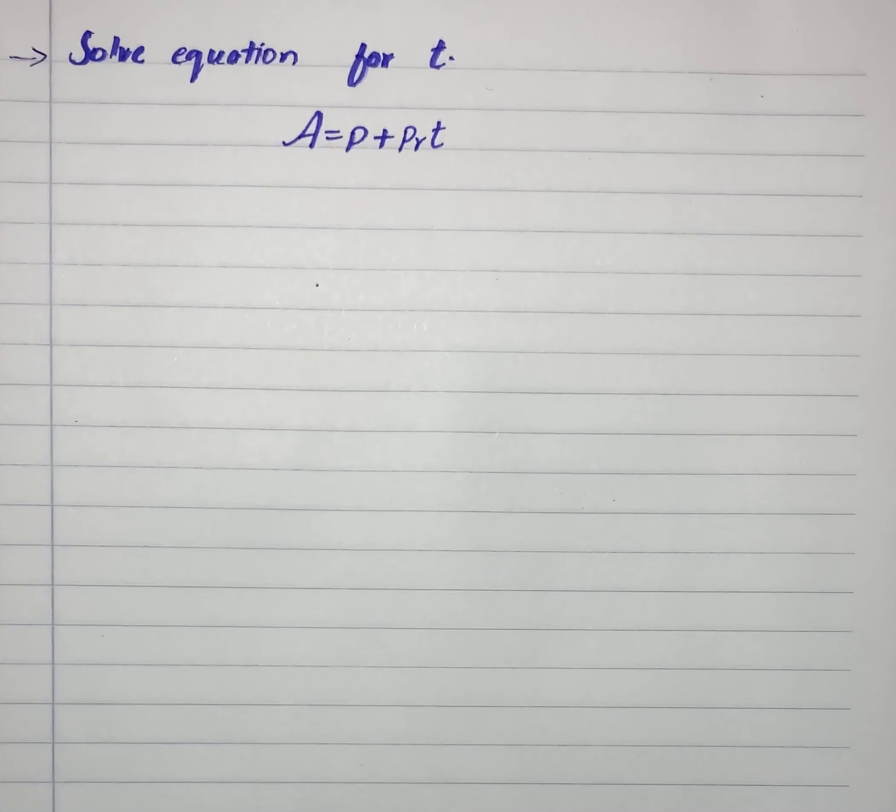Here we have a unique kind of equation. It says A equals P plus PRT, and we have to solve it for T. We'll subtract P from both sides.